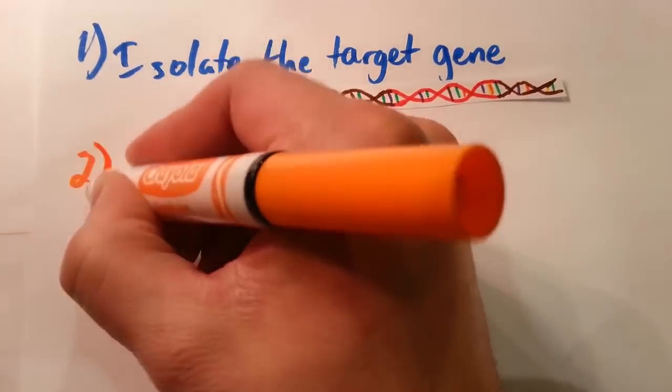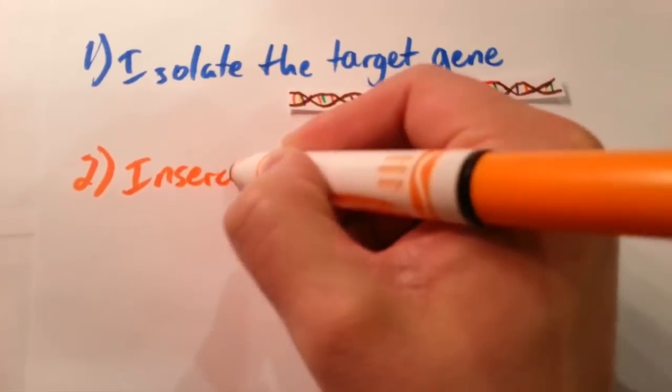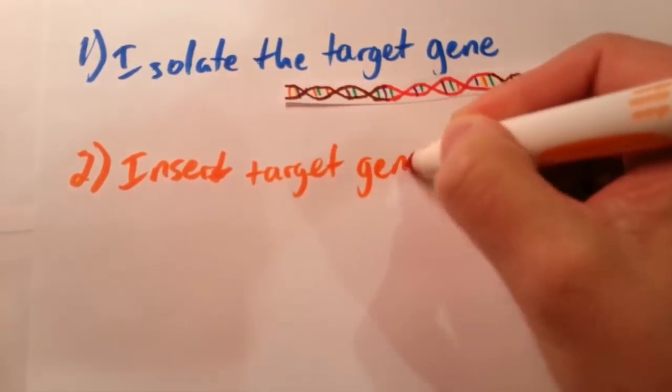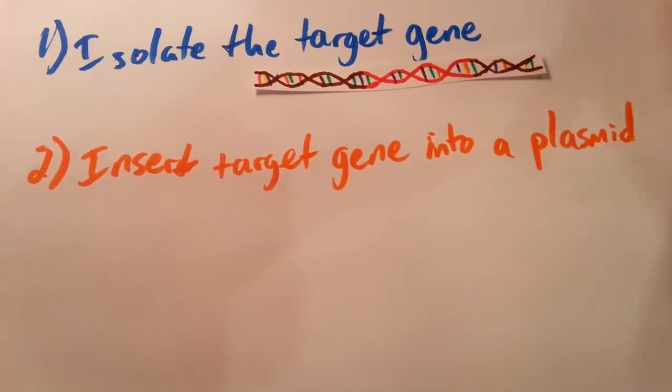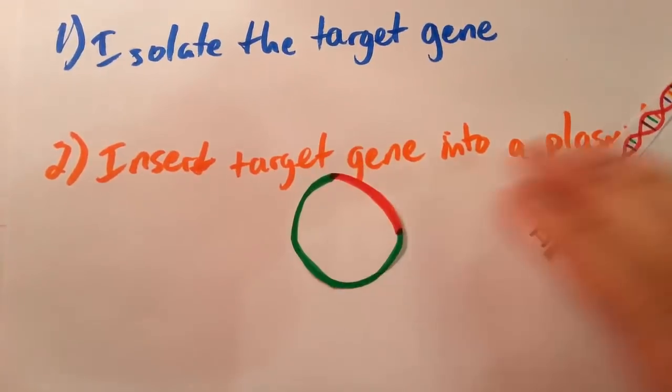And step number two was to insert that gene into a plasmid. And in our case, we had to use an enzyme that opened up our plasmid and then we had to use another enzyme that act like glue and glued together our target gene and our plasmid all into one little circle.